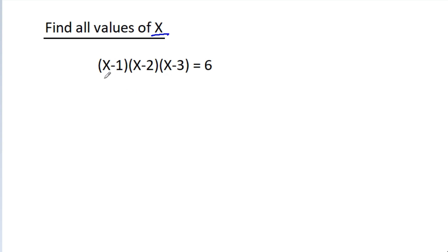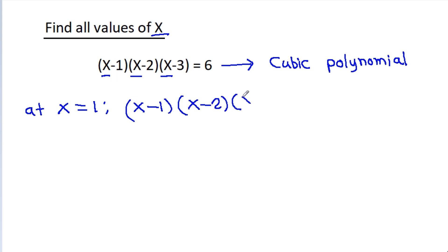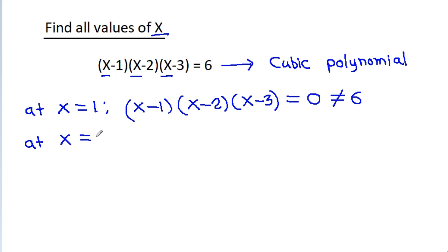We have (x-1)(x-2)(x-3), so it will be a cubic polynomial. At x equal to 1, (x-1)(x-2)(x-3) will be equal to 0, because (x-1) will be 0 — so it is not equal to 6. At x equal to 2, (x-2) will be 0, so it is 0, which is not equal to 6.